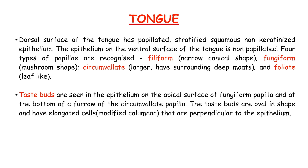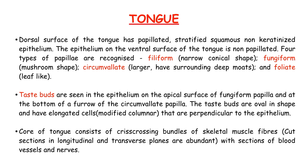Taste buds are seen in the epithelium on the apical surface of the fungiform papilla and at the bottom of the furrow of the circumvallate papilla. The taste buds are oval in shape and have elongated modified columnar cells that are perpendicular to the epithelium. The core of the tongue consists of criss-crossing bundles of skeletal muscle fibers, with cut sections in longitudinal and transverse planes, abundant with sections of blood vessels and nerves.